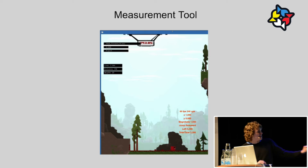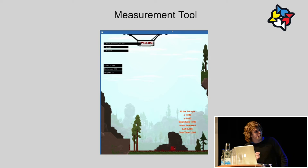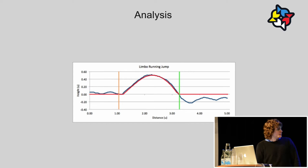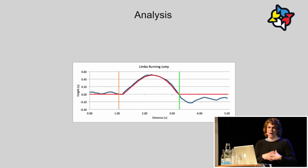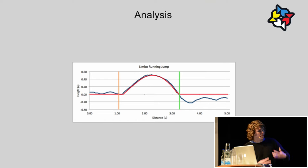I then load the video into another application, click the position of the character at every frame, and export that as data. So now I've made the transition from very precise input, recording it all, and tracking the movement — movement over time with all the information I need. I ran many different experiments with running, jumping, releasing the jump, and changing direction, until I could break down everything about the basic jump.